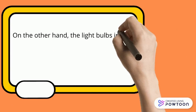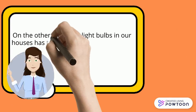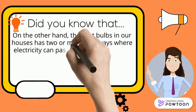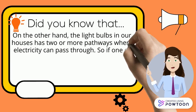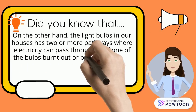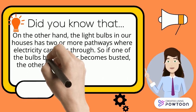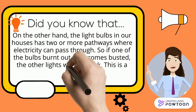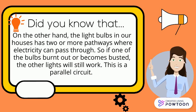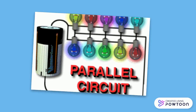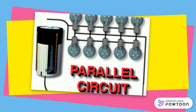On the other hand, the light bulbs in our houses have two or more pathways where electricity can pass through. So if one of your bulbs burns out or becomes blasted, the other lights will still work. This is a parallel circuit — this is an example of a parallel circuit.